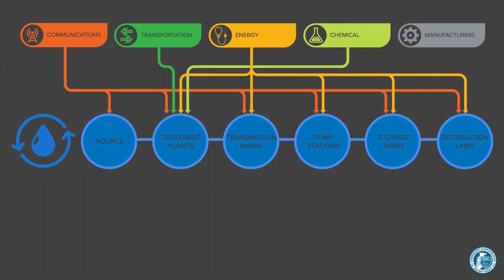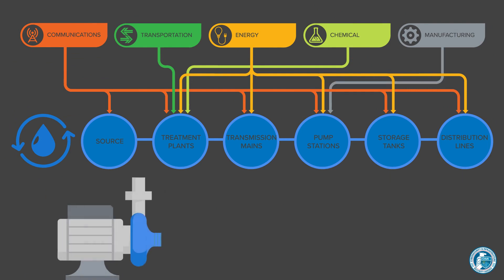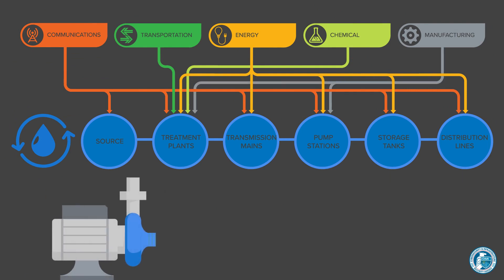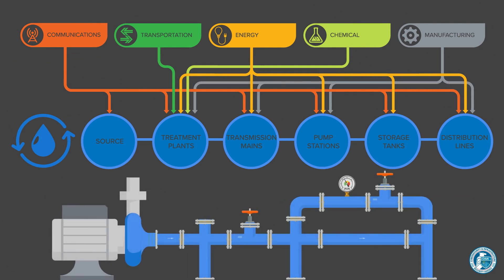Water systems are also dependent on the critical manufacturing sector to produce pumps, specialized process equipment, pipes, and parts used in the water system.